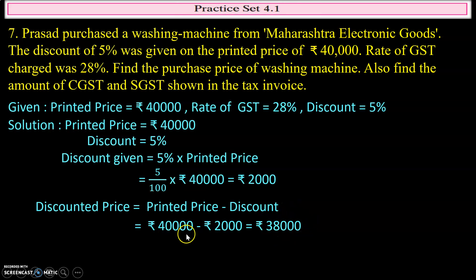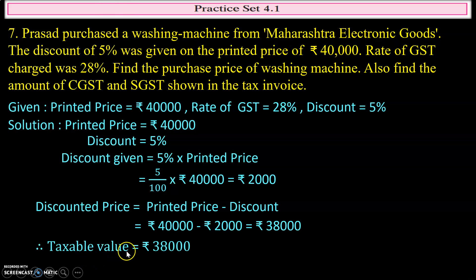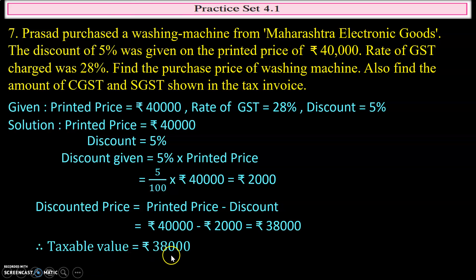The GST is not going to be charged on ₹40,000 — that's why we always ask for a discount: to reduce the price so the GST is charged on the lower amount. The taxable value is now ₹38,000. The amount on which tax is charged is called the taxable value.